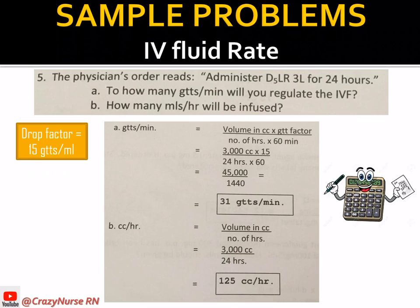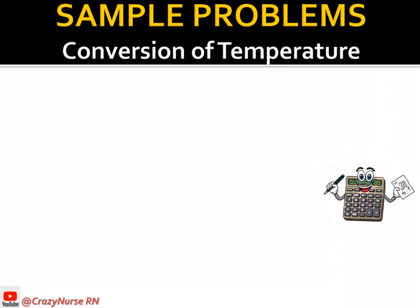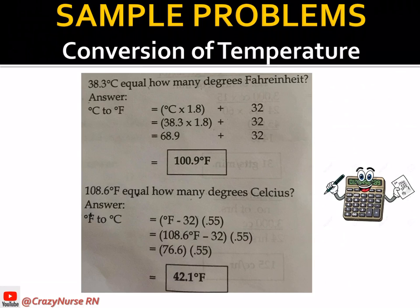For temperature conversion: 38.3 degrees Celsius equals how many degrees Fahrenheit? Using the formula: degrees Celsius times 1.8 plus 32. Substituting: 38.3 times 1.8 equals 68.94, plus 32 gives 100.9 degrees Fahrenheit. So 38.3°C is equivalent to 100.9°F.